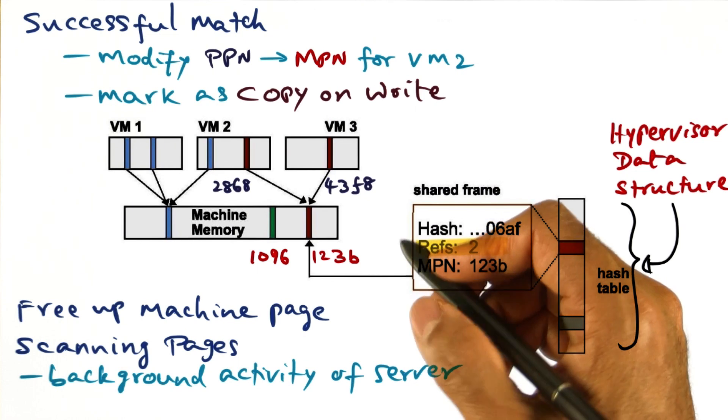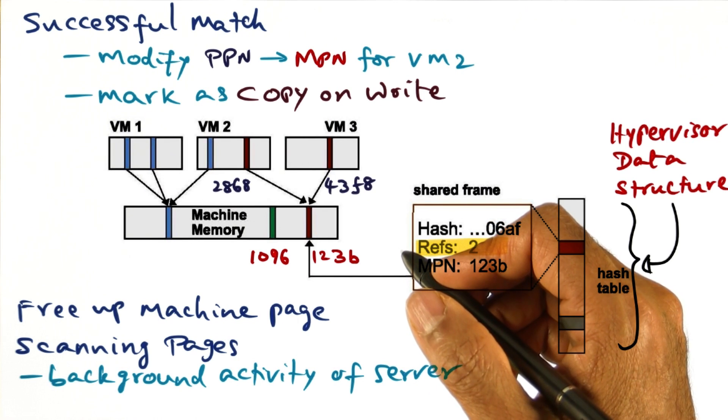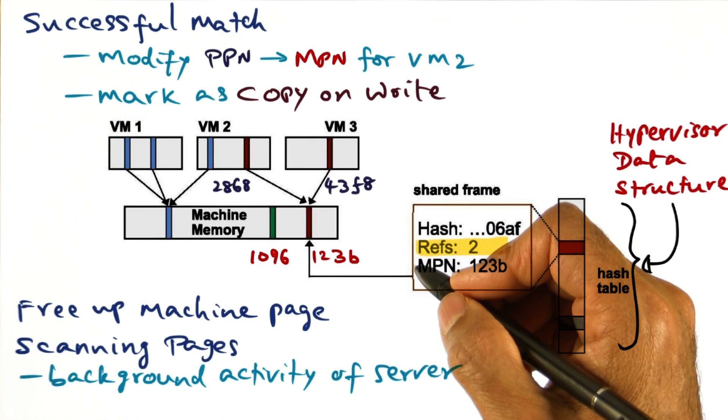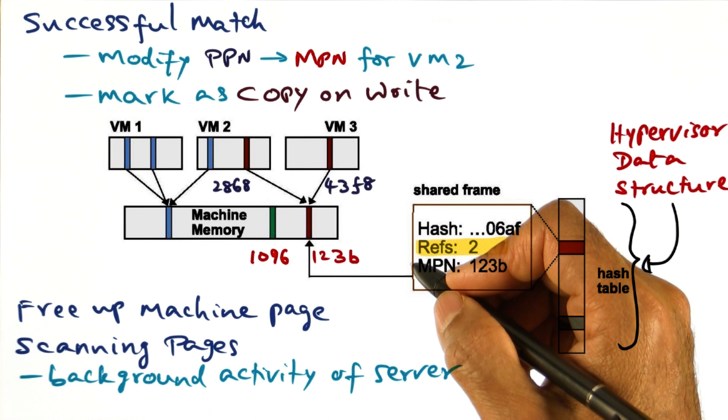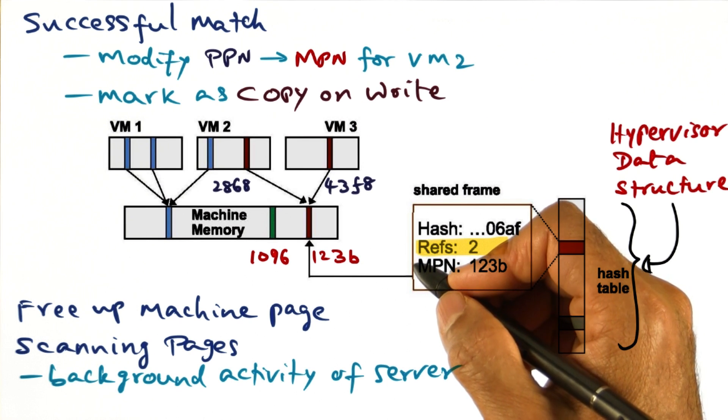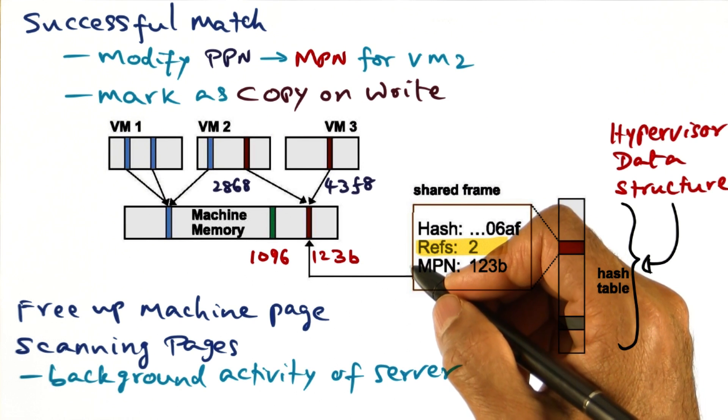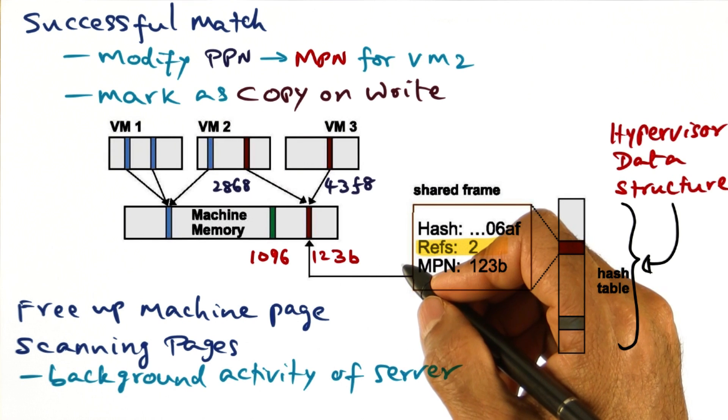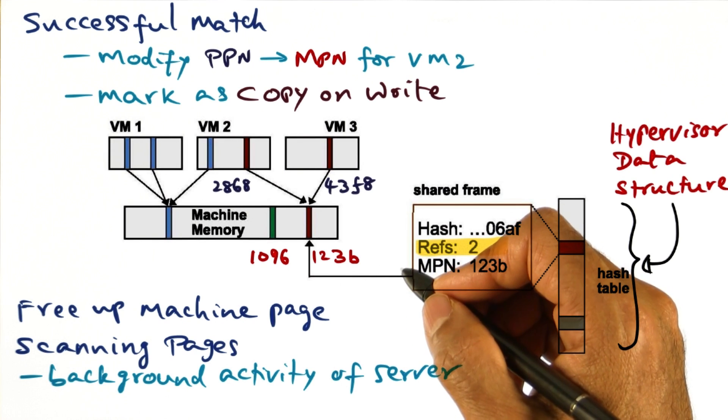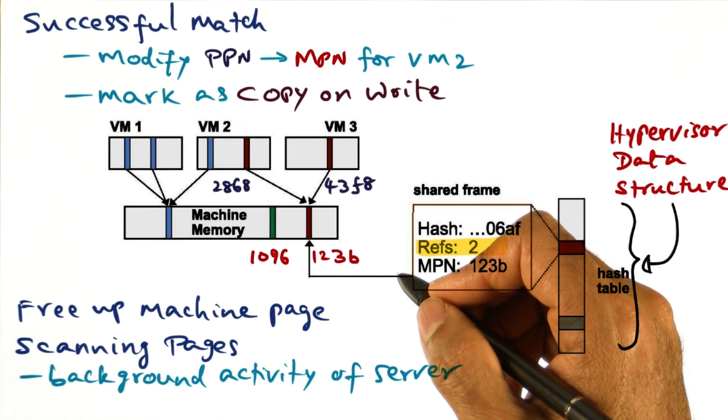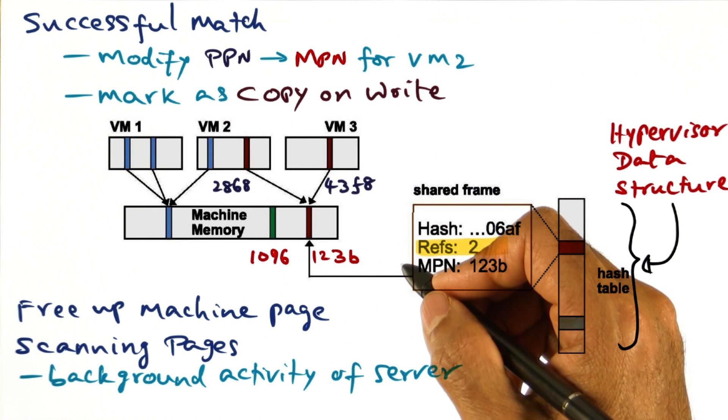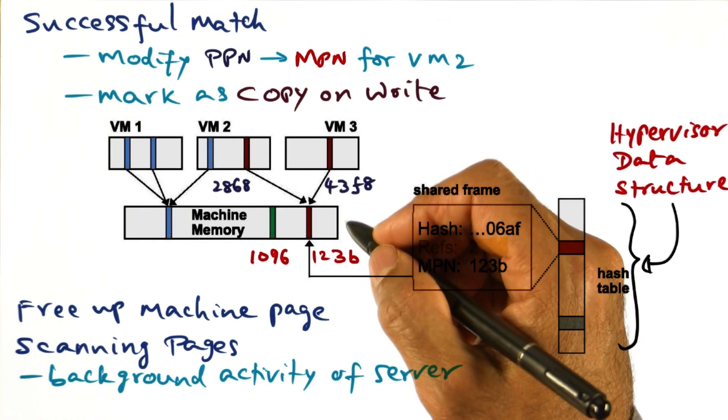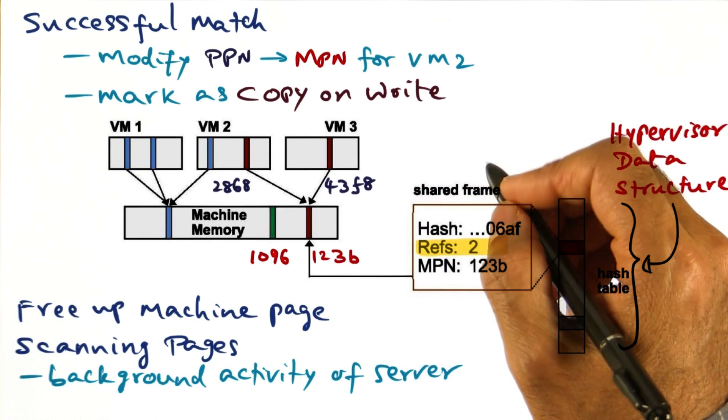And the important thing that you have to notice is that as opposed to the earlier mechanism that I mentioned where I said that with the connivance of the guest operating system, the hypervisor can get into the page table data structures inside the guest operating systems, no such thing here. It is completely done oblivious to the guest operating systems. And therefore, there is no change that needs to be made to the guest operating systems in order to do the sharing in an oblivious way.